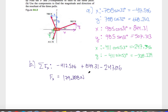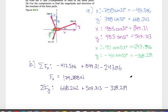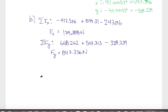Now we do the same for y components. Adding all forces in the y direction: 668.262 plus 507.313 minus 328.239. Adding these together gives a net y component of 847.336 newtons. These are our components — now we just need to put them together.